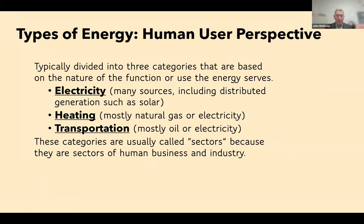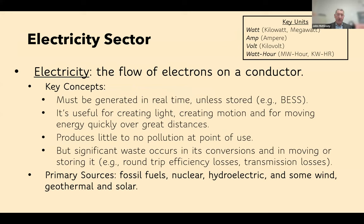From a human user perspective, we divide energy into three sectors: electricity, heating, and transportation. For most of our history, transportation has been synonymous with oil, heating was largely coal and is increasingly natural gas, and electricity is made from many different sources and used for many things. Electricity is the movement of electrons on a conductor. Key units include watt, kilowatt, megawatt, gigawatt — the watt measures the rate of flow, and the watt-hour measures total energy that flowed.